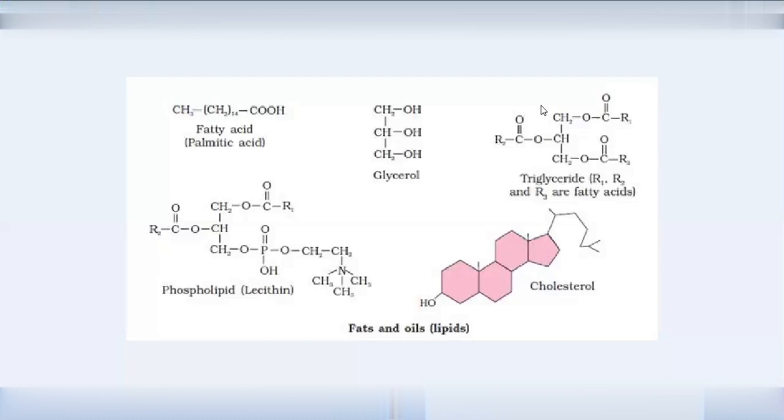Ergosterol is very important in the plant. This is a steroid compound. This is in high concentration in the yeast. Upon UV irradiation, it converts to vitamin D. This ergosterol is a sterol in high concentration in the yeast.